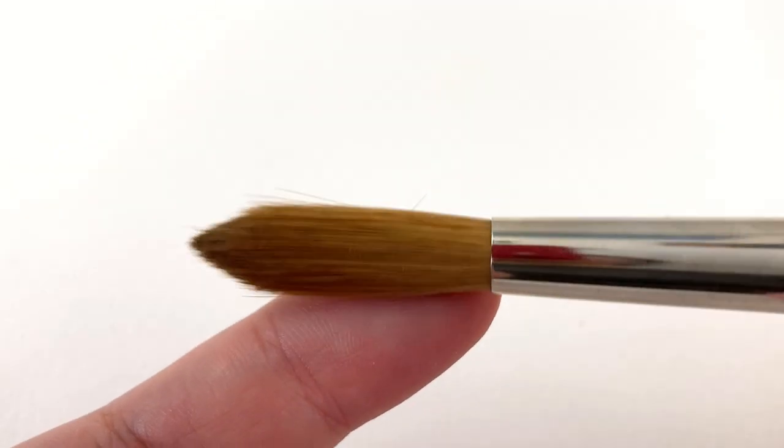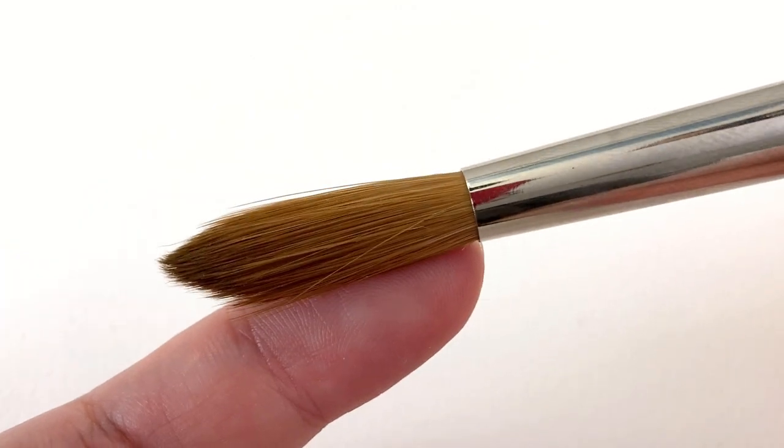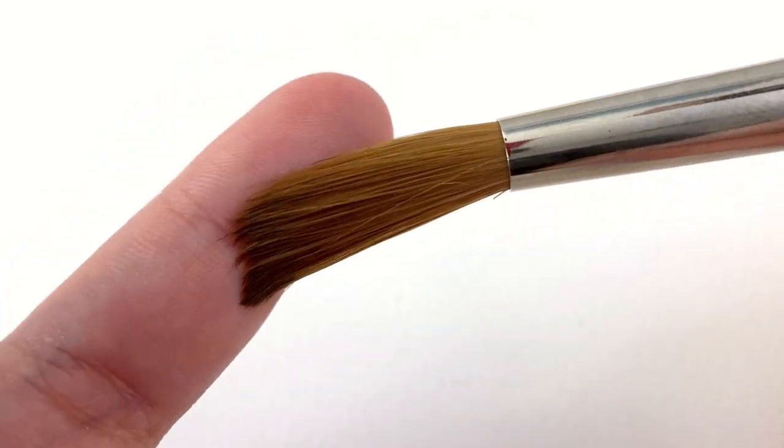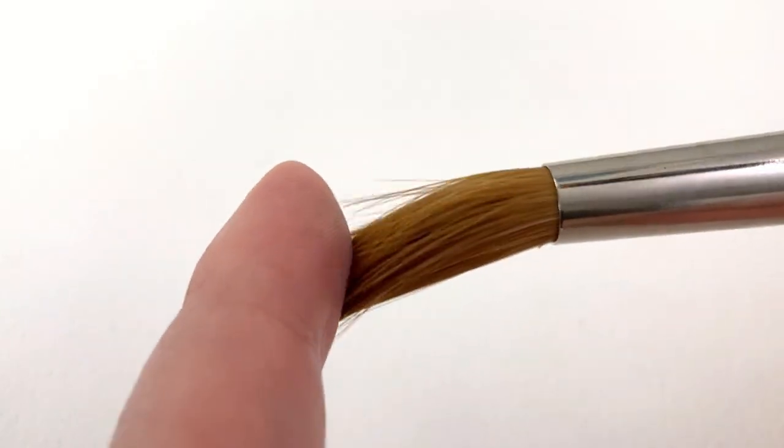The barrel feels a tiny bit thicker but I don't think you will notice it unless you have maybe the da Vinci Cosmo Top Spin also in your brush pot and use one after the other. Let's do the snap test. I would say it's medium to firm kind of snap.